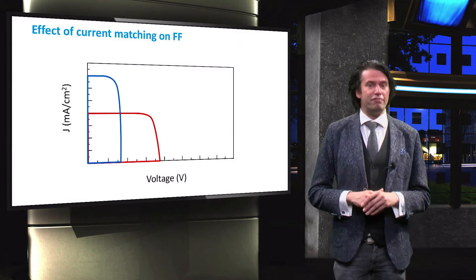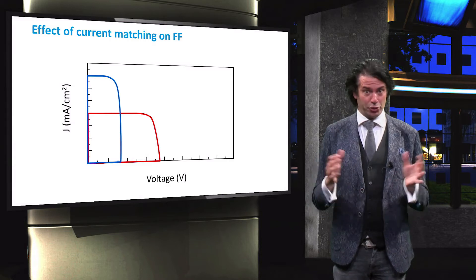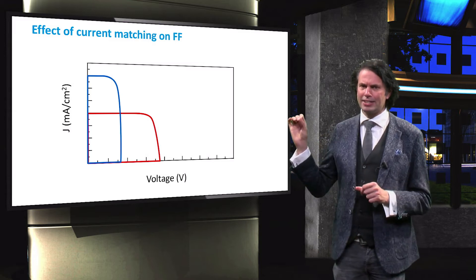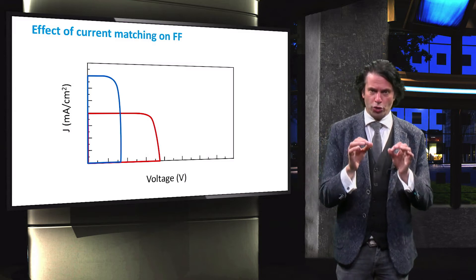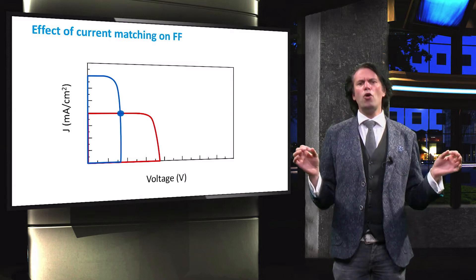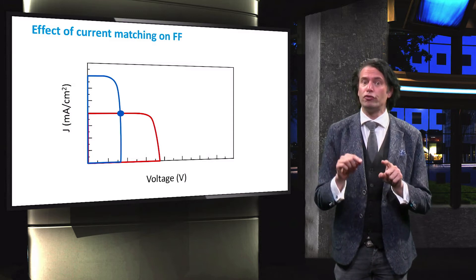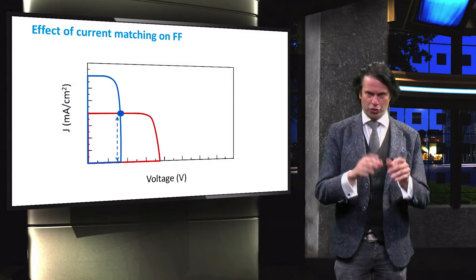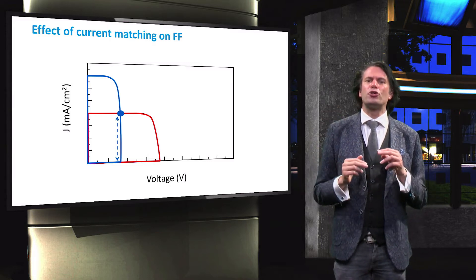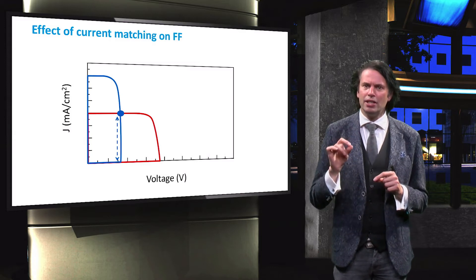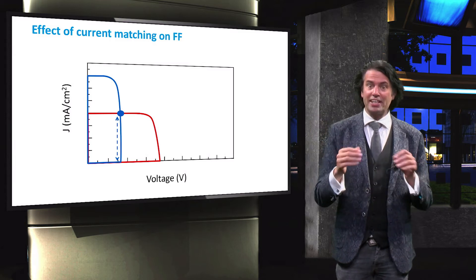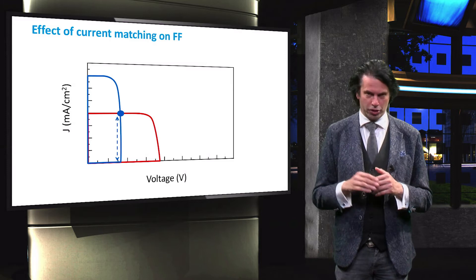Here we see the JV of the sub-cells of a tandem cell. As you can see, the sub-cell with the highest open-circuit voltage, the top cell, has in this example the lowest current density. So the current density in this tandem cell is top cell limited. Now we are going to construct the total JV curve of this tandem cell. The current range in which the bottom cell is operating is limited by the current range of the top cell. This means that the bottom cell is operated in the indicated range, operating at a voltage close to the open-circuit voltage under illumination.